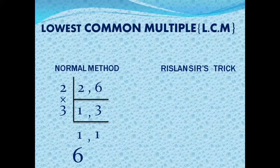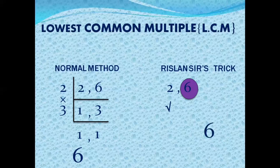To explain again: you have two numbers, 2 and 6. Compare them — 6 is the greatest number. Check if 6 can be divided by the smallest number, 2. Yes it can divide, so the LCM is the largest number, which is 6.